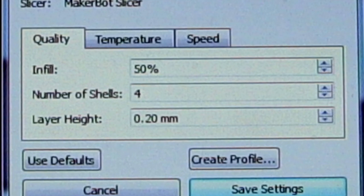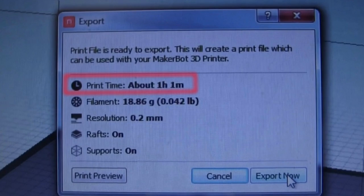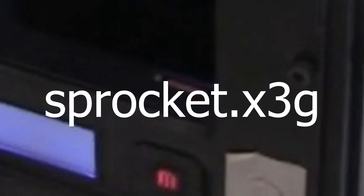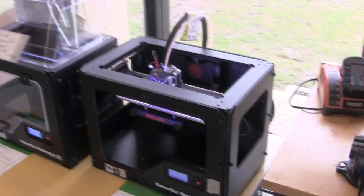That's all I modified, so the next step was to bring up the export window. That calculates an estimate for how long it'll take to print. If it's too long, then you can go back and change the settings for less infill and so on. When I exported it, it created an X3G file, which I put on an SD card to put on the printer.